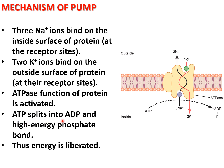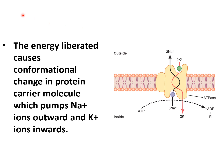ATP splits into ADP and a high-energy phosphate bond, liberating energy. This energy causes conformational changes in the protein molecule, which pumps sodium ions outward and potassium ions inward. The precise mechanism of this conformational change is yet unknown.